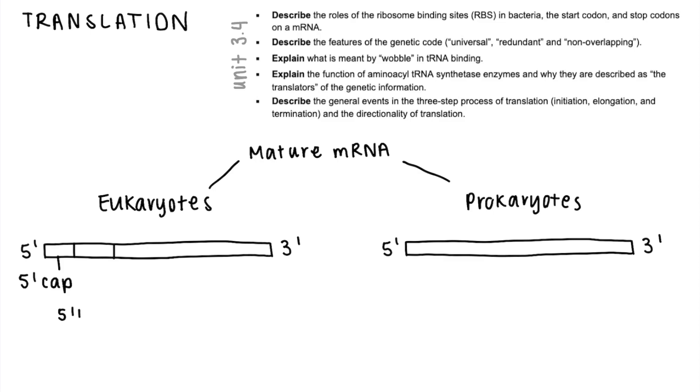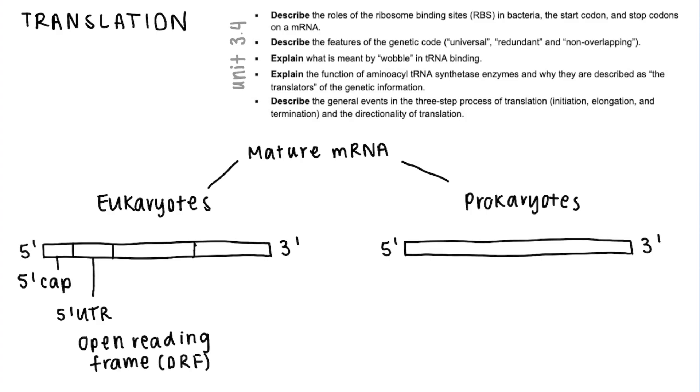Next is the 5' untranslated region which is a segment of RNA that is not translated into protein. It sometimes serves a regulatory function. To connect this back to transcription, in transcription what doesn't make it to the end product are introns and in translation what doesn't make it to the end product are the 5' and the 3' untranslated regions.